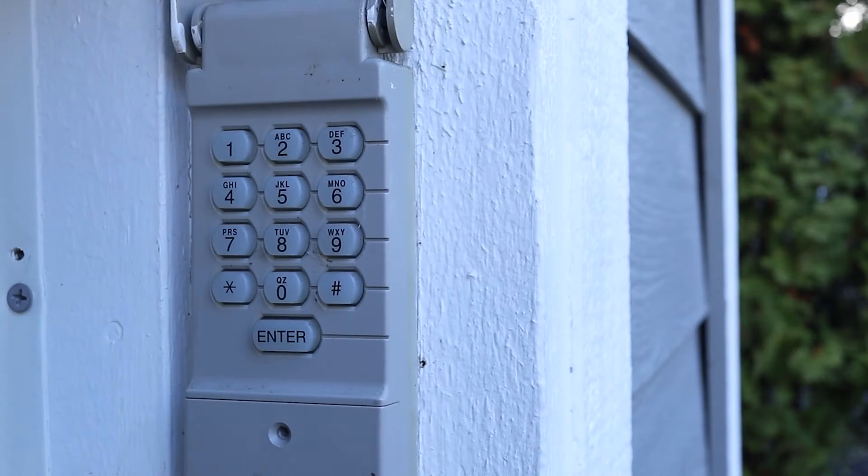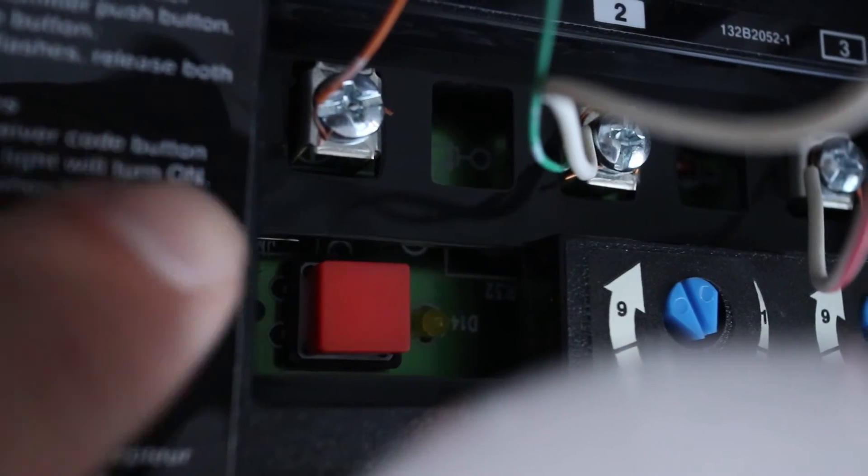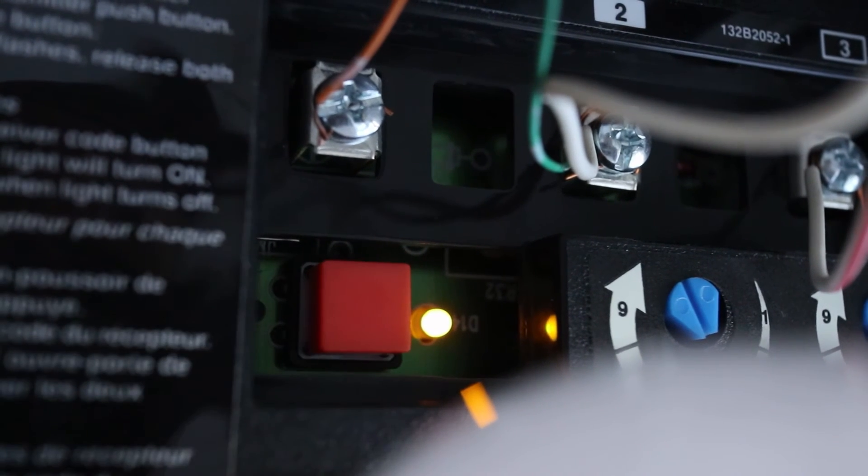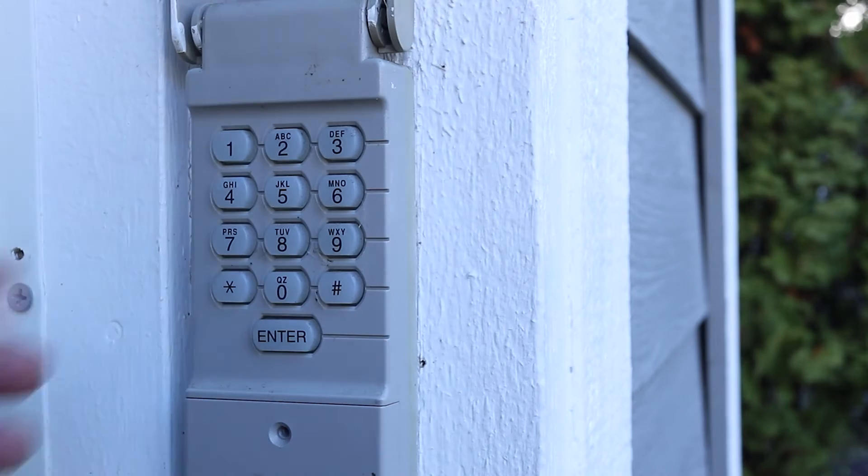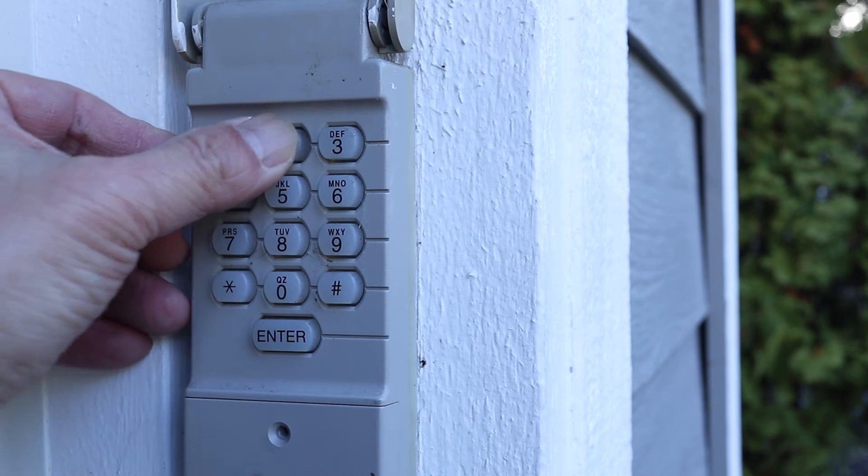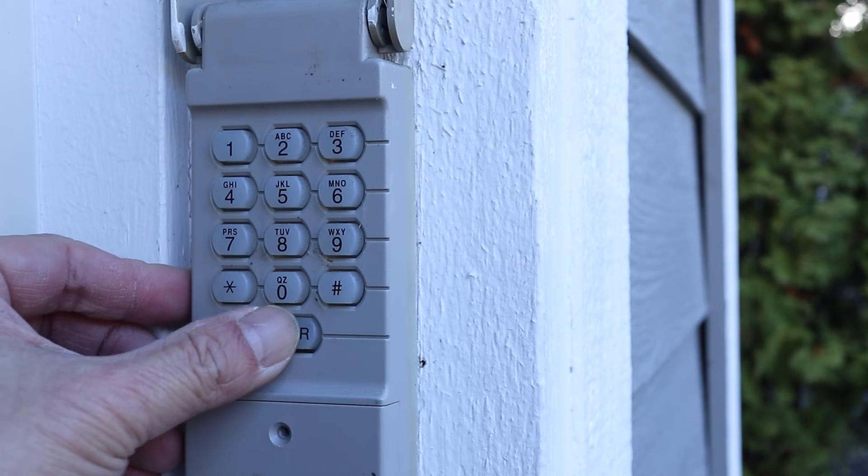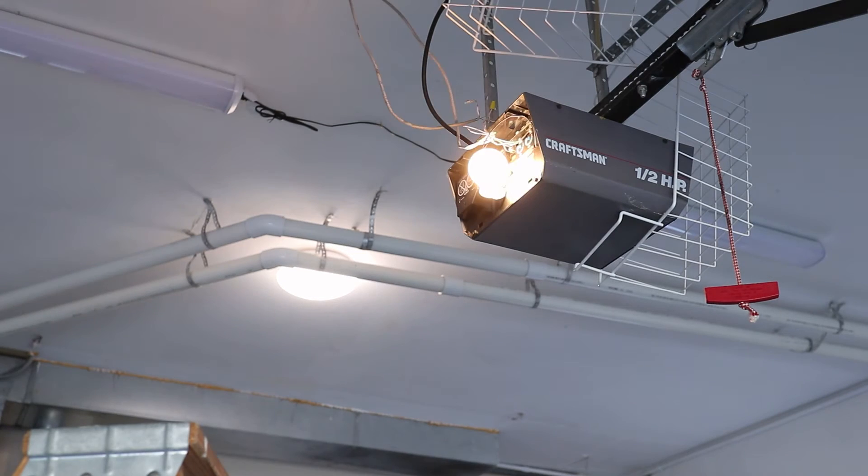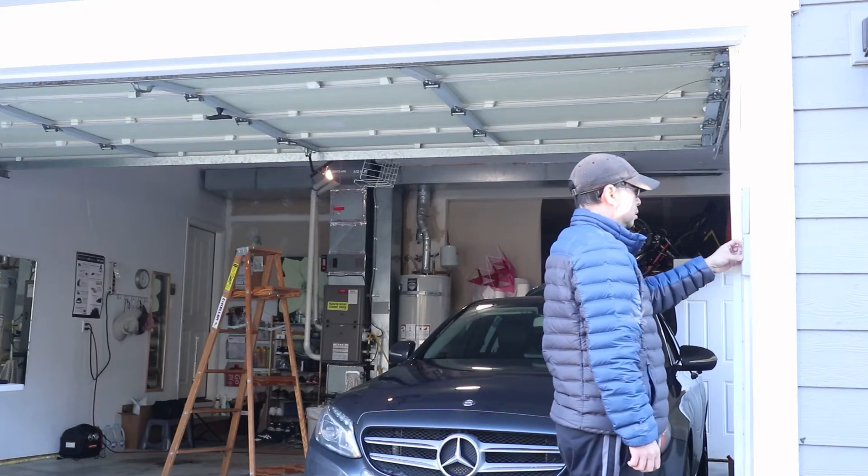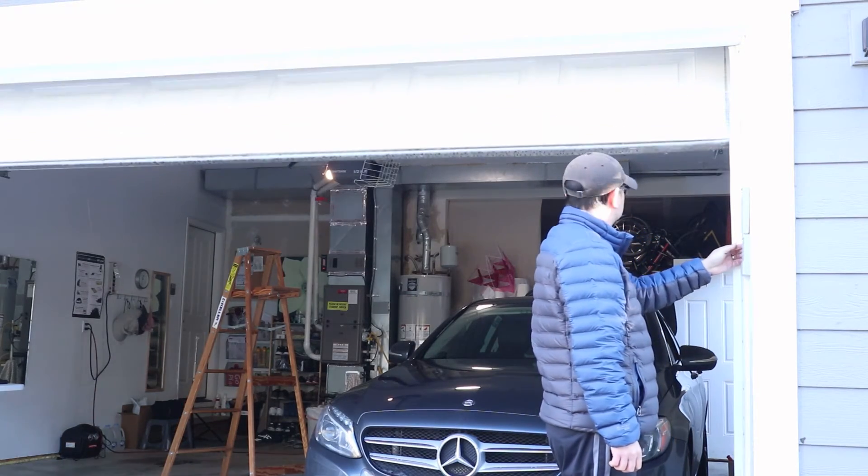Now let's get the keypad programmed. Start by pressing the sync button on the garage door opener. Now type in a four digit pin number and press and hold the enter button. The garage door opener will blink once. Then press the enter button on the keypad again and then the door will operate like normal.